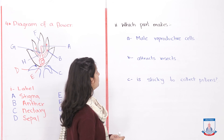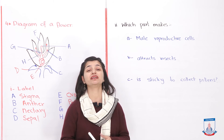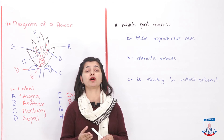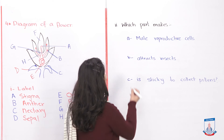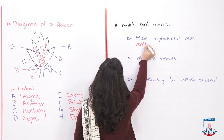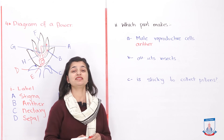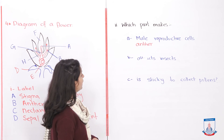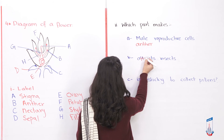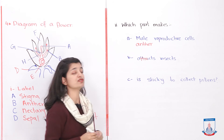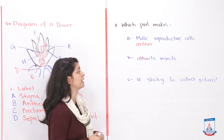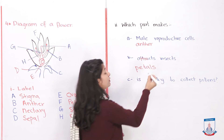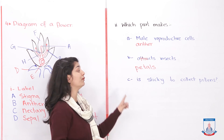First question: which part makes the male reproductive cells? Male reproductive cells are the pollens, and the part responsible for producing them is the anther — part of the stamen, the male reproductive organ. Second question: which part attracts insects? That would be your petals, because the purpose of petals is that they are colourful and fragrant, which is why they attract insects.